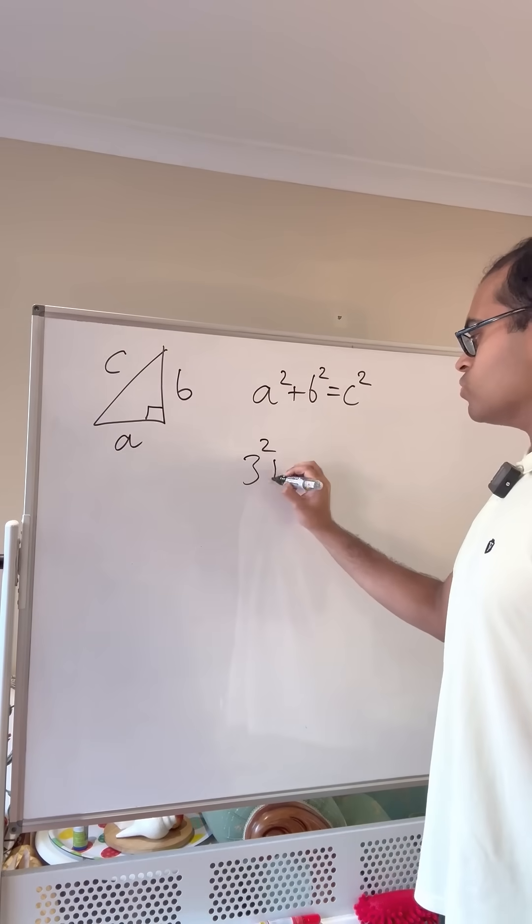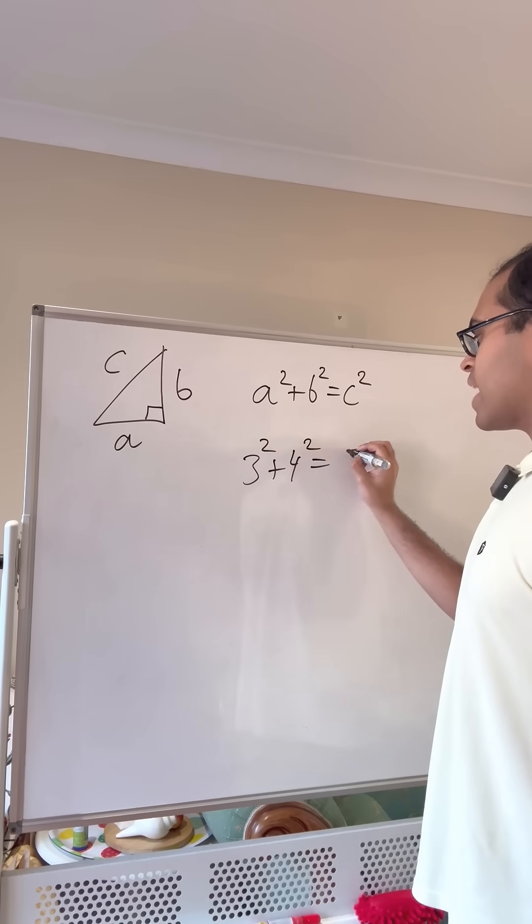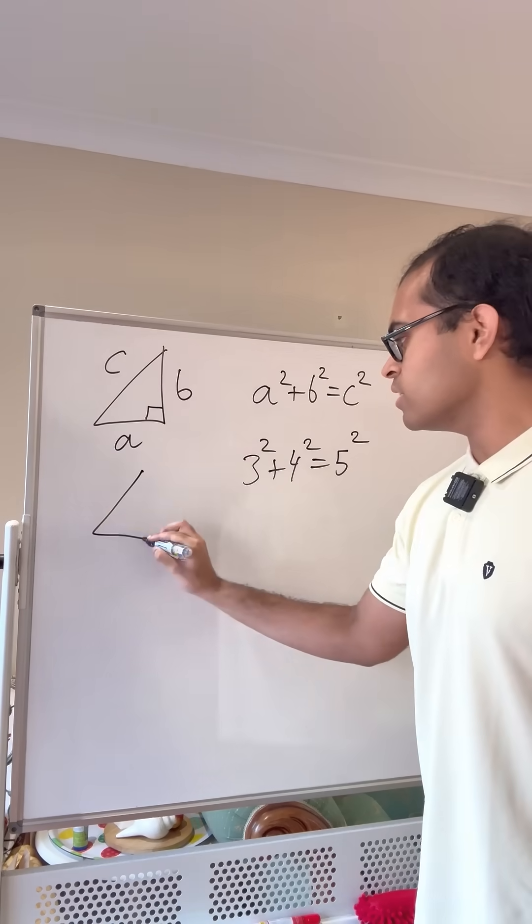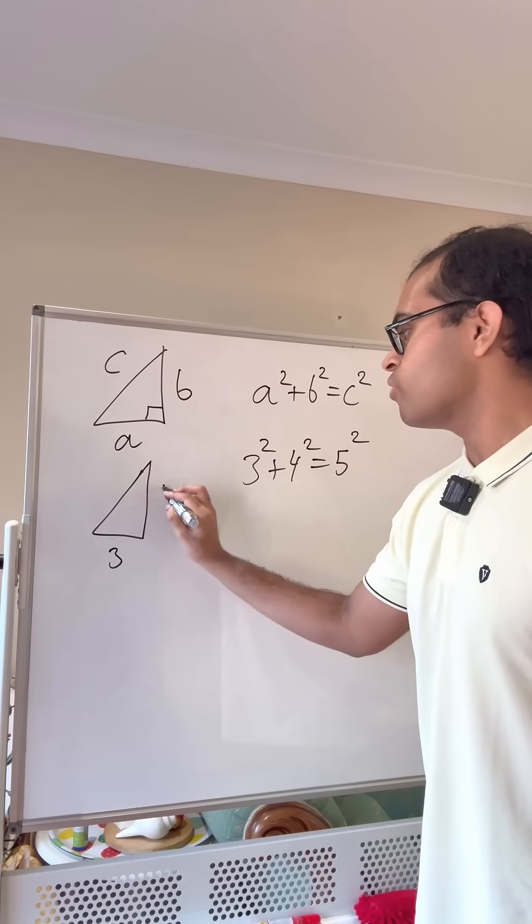So for example, the most famous one is 3 squared plus 4 squared is equal to 5 squared. You can mentally check that. You've got a right triangle of side lengths 3, 4, and 5.